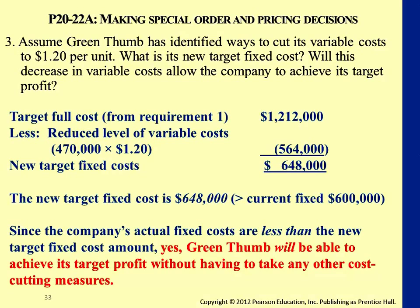Let's move along to the third and fourth decision-makings: whether we decide to drop a product or not, and how we mix products and sales. What comes to mind when deciding whether to drop a product? Do you have a profit or not? Since we learned about variable costs and fixed costs, both need to be considered. Just like how we decide on special orders — if fixed cost is the same, then what really matters is the contribution margin.